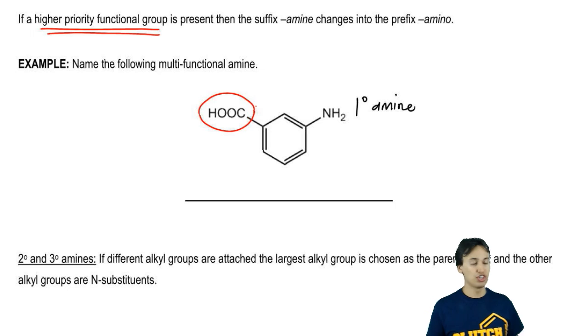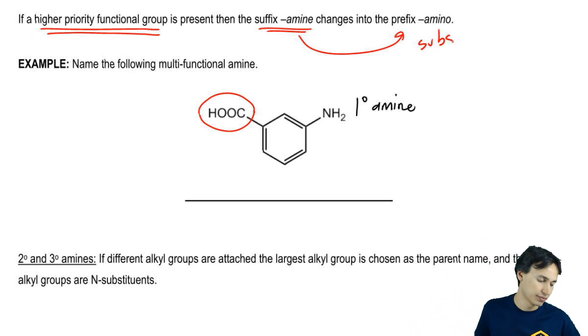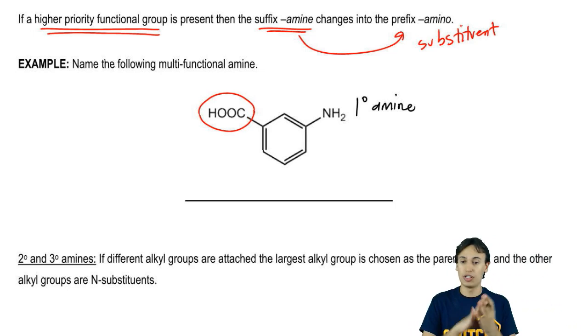When that happens, you're going to change the suffix amine. You're not going to use that anymore and you're going to replace it with the prefix amino. You're going to name it as a substituent because the root is now going to be given to the higher priority group.